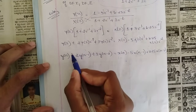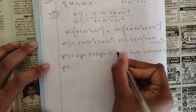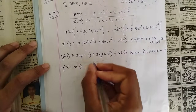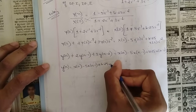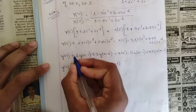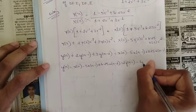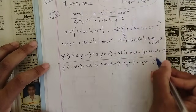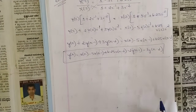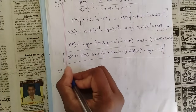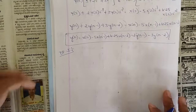Bringing y(n) to one side, the two y(n) terms move to the right with sign changes. The final system equation is: y(n) = x(n) - 5x(n-1) + 6.25x(n-2) - 2y(n-1) - 3y(n-2). This is the system function we derived from the transfer function H(z). Now we will draw the DF1 and DF2 structures for this equation.